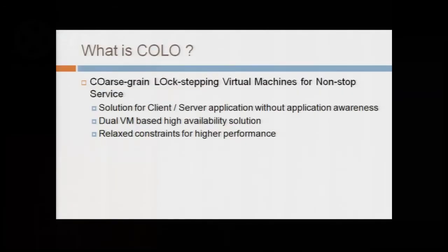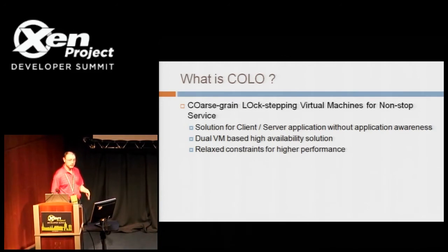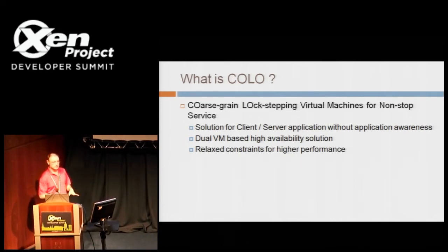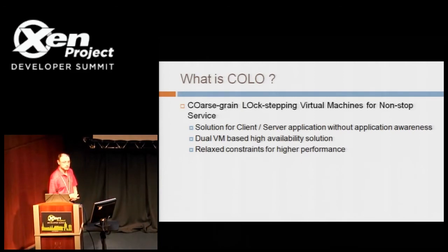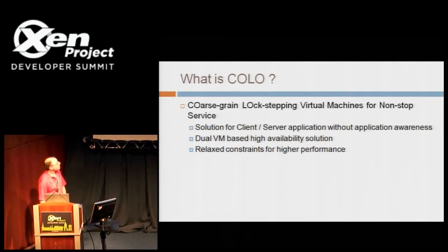So what is Colo? Colo is a coarse-grain lockstepping for high availability. The idea is that you want to provide a solution for a client-server model, so you encapsulate the server side so that it doesn't have to know anything about the high availability features. It uses dual VMs on separate systems, and it uses a more relaxed constraint mechanism than was previously done. We'll talk about that in a little bit.